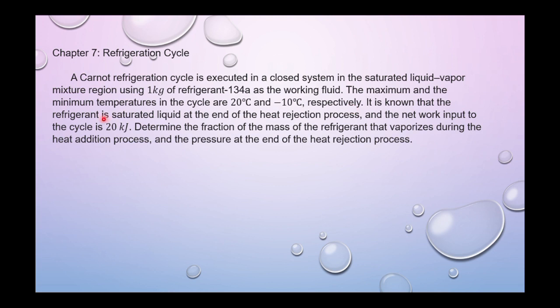It is known that the refrigerant is saturated liquid at the end of the heat rejection process, and the net work input to the cycle is 20 kJ. Determine the fraction of the mass of the refrigerant that vaporizes during the heat addition process, and the pressure at the end of the heat rejection process.